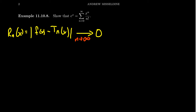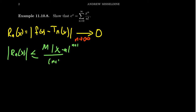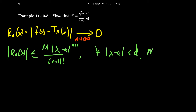Taylor's inequality tells us that the remainder R_n of x is bounded above by M times |x minus a| to the n plus one over (n plus one) factorial. This applies for all x's sufficiently close to a — that is, within some fixed finite distance d from the center a. The value M is an upper bound for the (n+1)th derivative of the function on that interval.